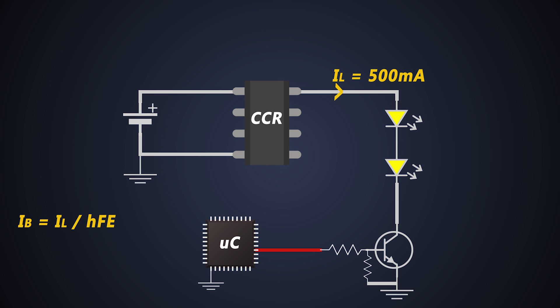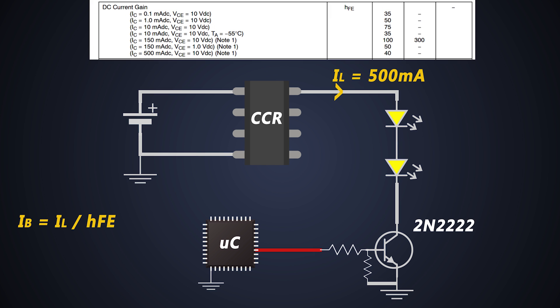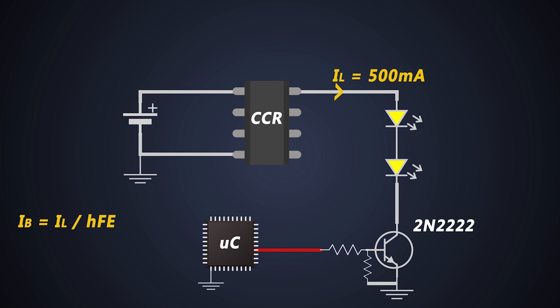Let's consider we have chosen this BJT. The HFE of the transistor is 50. Hence the base current can be calculated with this formula.